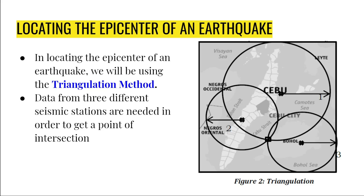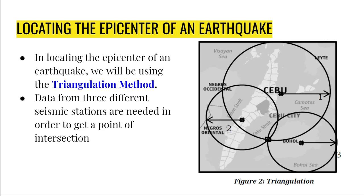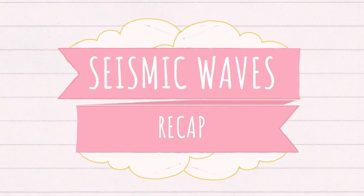This image is provided in your module. As you can see, we have three circles: one showing the seismic station found in Bohol, the second a seismic station found in Negros Oriental, and the third a seismic station found in Cebu. Once you have data from these three different seismic stations, you can get the point of intersection of the three circles you have drawn, and that will show you where the epicenter of an earthquake is.